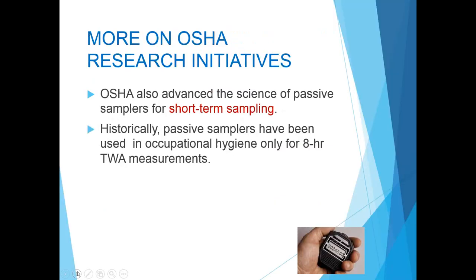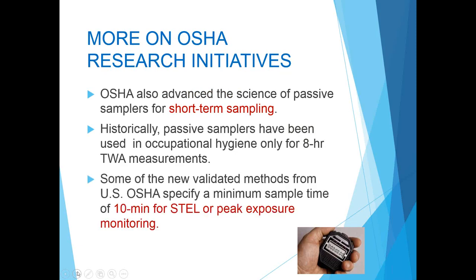OSHA also advanced the science of passive sampling for short-term sampling. Those of us that have been in industrial hygiene for many years think of passive samplers as only used for eight-hour TWA sampling, but some of the new methods from OSHA specify minimum sample times of only 10 minutes — including the benzene method. This allows for use of passive samplers in evaluating short-term exposure limits.